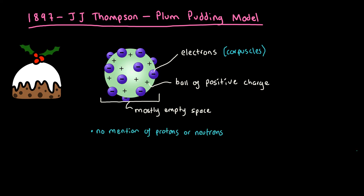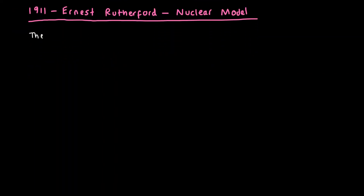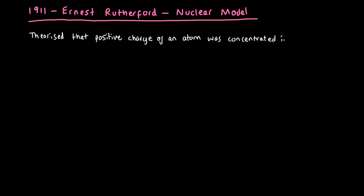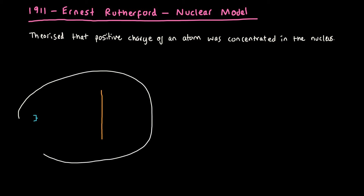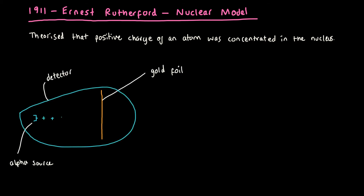This takes us to 1911, when Ernest Rutherford came up with his nuclear model of the atom. He theorised that the positive charge of an atom was concentrated in the nucleus. He conducted his famous gold foil experiment to confirm this. He got a thin sheet of gold, placed an alpha source at one end, and surrounded the whole thing with detectors. He fired the alpha particles — some went straight through, some deflected at various angles, and some bounced right back.